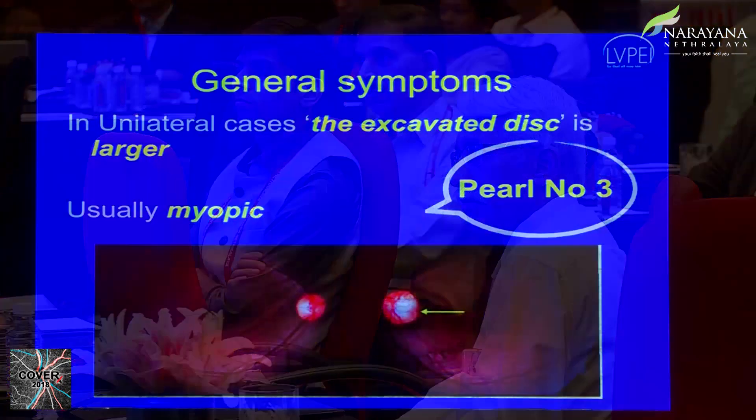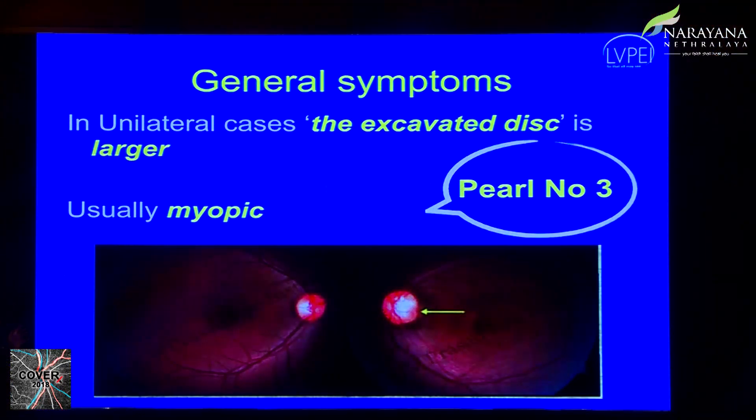Pearl number three: in unilateral cases, the excavated disc is usually larger compared to the fellow disc. These patients are usually myopic and present with amblyopia (lazy eye). You can see on examination that the abnormal optic disc pit side disc is larger than the other eye.